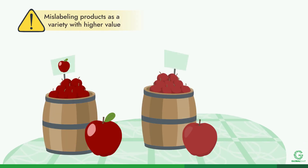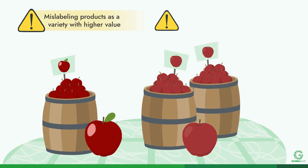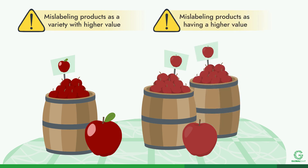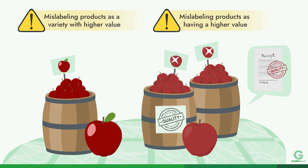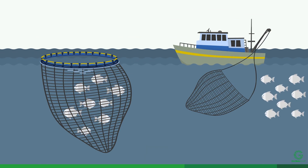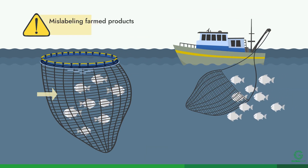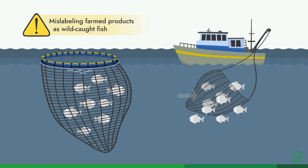Food fraud might also include incorrectly labeling a product as a variety with a higher market value. Within a specific variety, a product may be mislabeled as having a higher graded value than it truly does — the packaging material or invoices may state that the product has achieved a higher grade and quality than what is actually being sold. In the aquaculture industry, food fraud might include mislabeling farmed products as wild-caught fish.